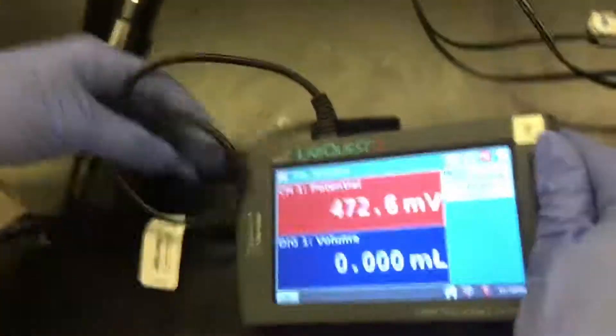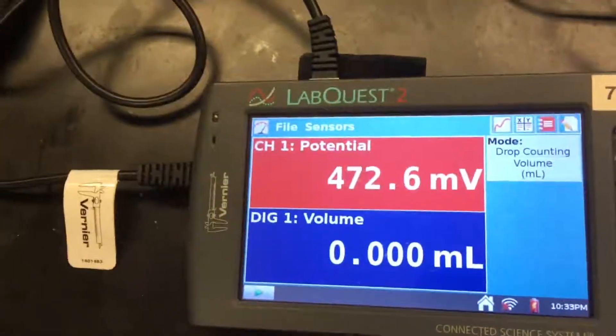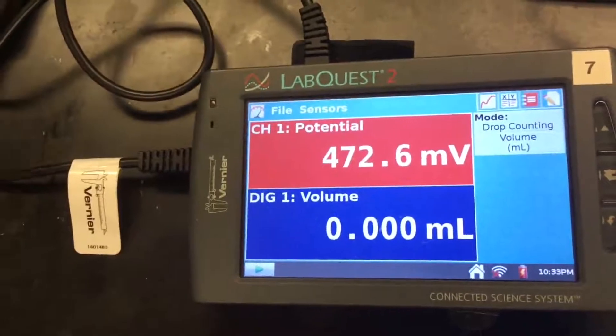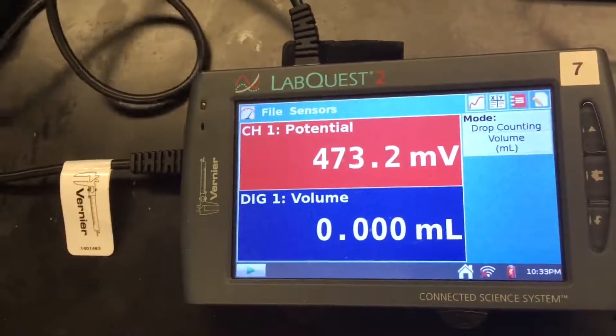Okay, so now both of the things are on. You can see that channel 1 is the redox probe, and then the drop counter is digital 1.